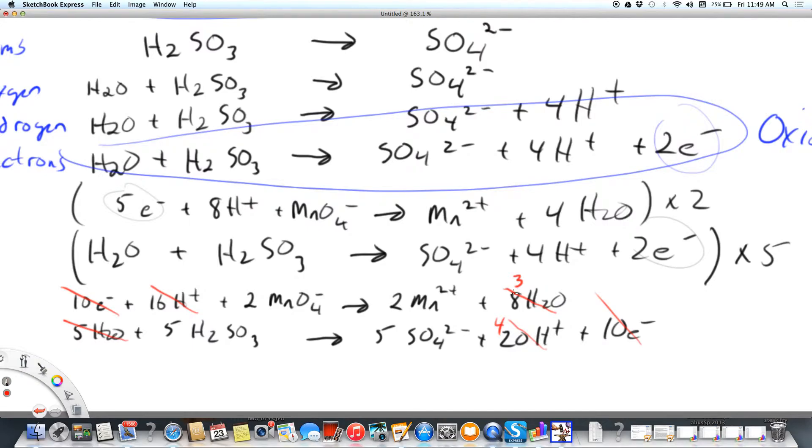So our final reaction, we just now copy down what is left. Two MnO4 minus plus five sulfurous acid molecules produces two Mn2+, manganese two plus, plus five sulfate ions, plus the three waters that were not canceled out, and the four hydrogen ions that were not canceled out. And that is our balanced redox reaction.